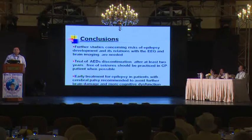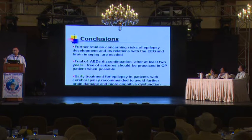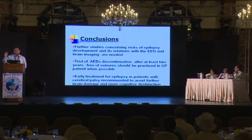If you have a generalized pattern with a normal EEG and minimal cortical or gray matter involvement in children with CP, then after two years of treatment — as with other children without CP — you should try to reduce medications from polytherapy to monotherapy, or from monotherapy to stopping medication in a very slow process. Early treatment for epilepsy in these patients is recommended.